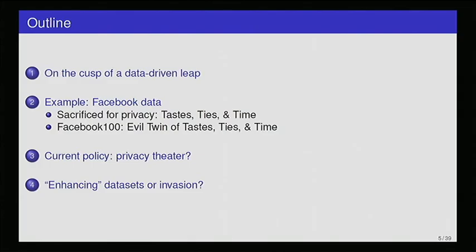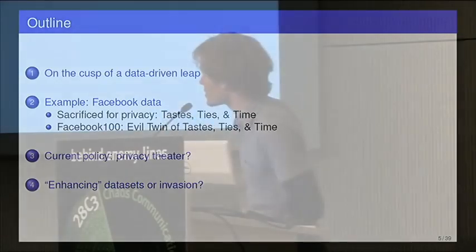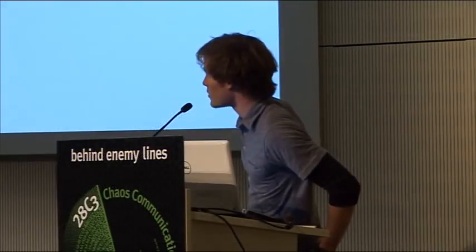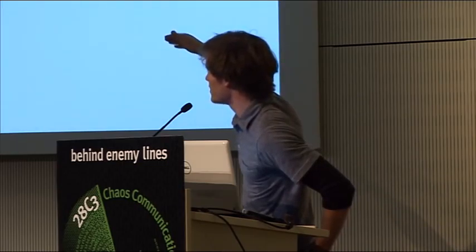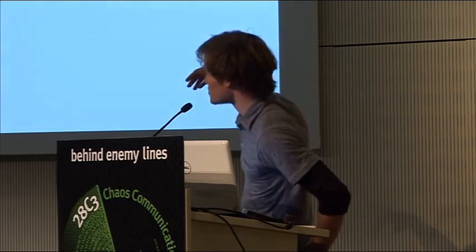Here's an outline. First, I'll motivate the whole thing on why these social media data sets are interesting, how they will help us make new discoveries about human behavior. Perhaps the most interesting data sets would be those that could come from Facebook. There was an attempt to create a very interesting data set from Facebook called the Tastes, Ties, and Time data set. I'll go over that and why that project failed in the end. And to put the whole thing into context, I need to also introduce the evil twin of Tastes, Ties, and Time, the Facebook 100 data set.